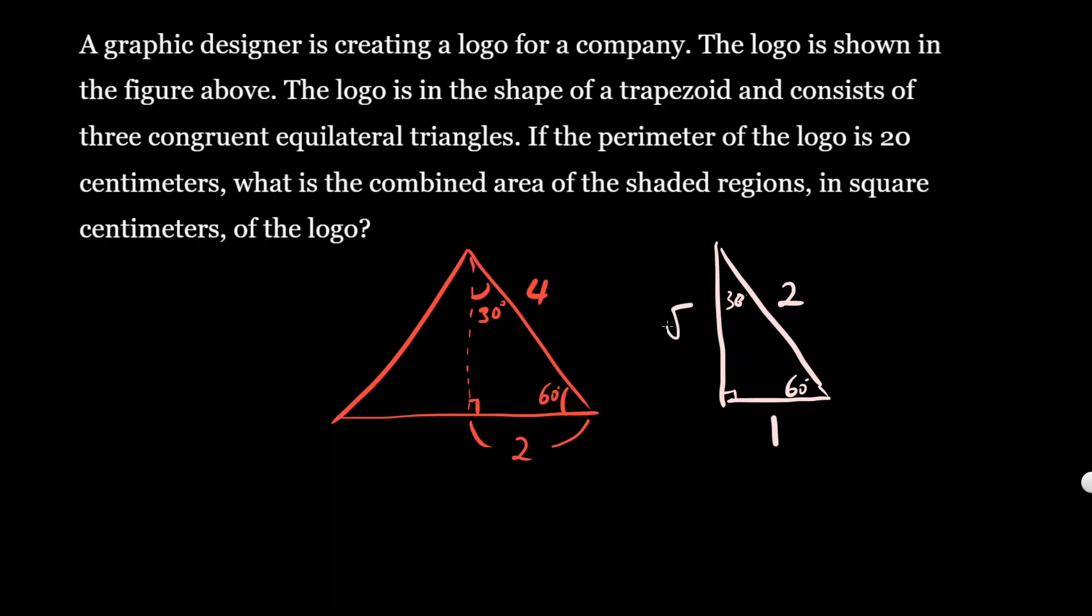So you should know this ratio. Then the height of this triangle, this height must be two times whatever. Remember, whatever this is times by radical three, so it's going to be two square root of three.